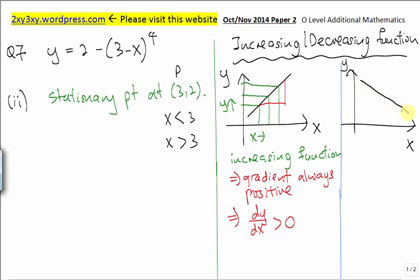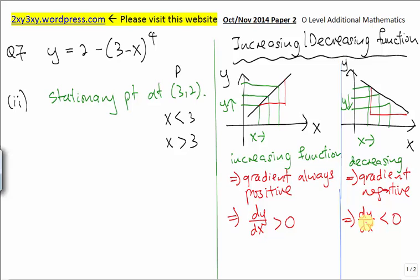For a decreasing function, the graph looks like this — when x increases, y decreases. We can see that a decreasing function will always have a negative gradient. Since gradient is related to dy/dx, we can say dy/dx is always less than 0. So to test whether a function is increasing or decreasing, we find dy/dx: if greater than 0, it's increasing; if less than 0, it's decreasing.